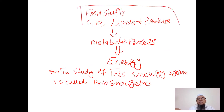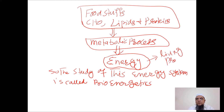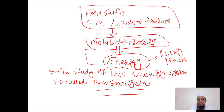Foodstuffs — carbohydrates, lipids, and proteins — undergo metabolic processes. During these metabolic processes, energy is generated, and this energy is utilized for living processes. The study of this energy system is known as bioenergetics.